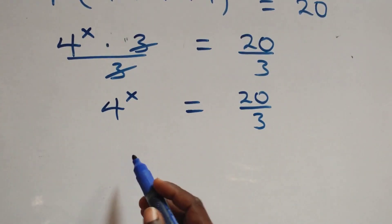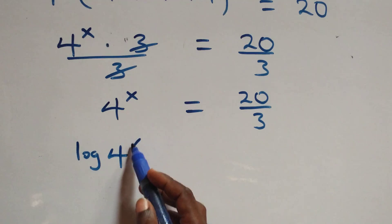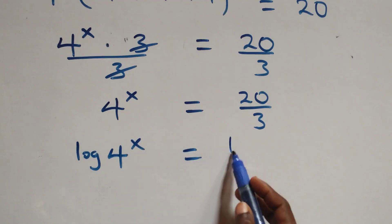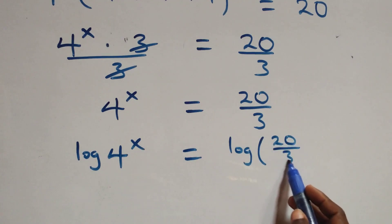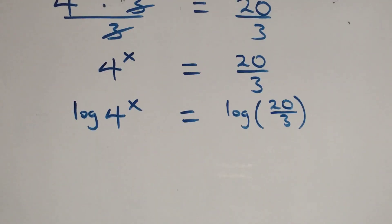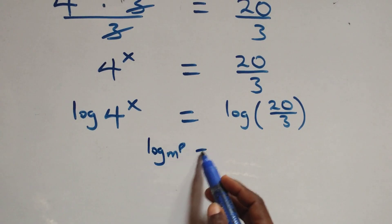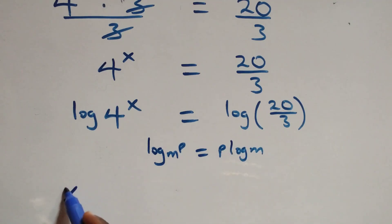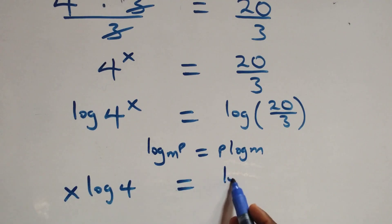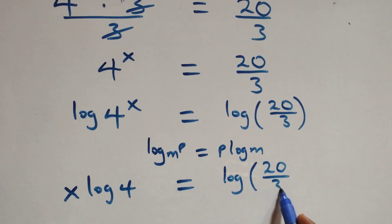Then the next step is we take the log on both sides. We have log of 4 raised to power x equals to log of 20 over 3. We apply the power rule of logarithms: log of n raised to power p is the same as p times log n. So we have x log 4 equals to log of 20 over 3.